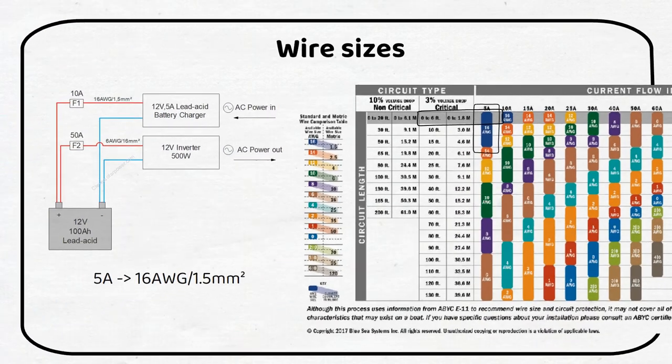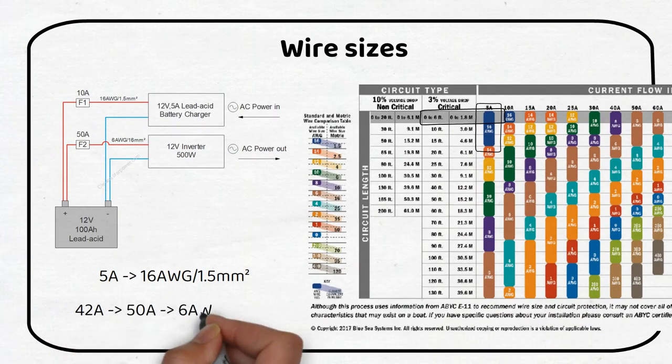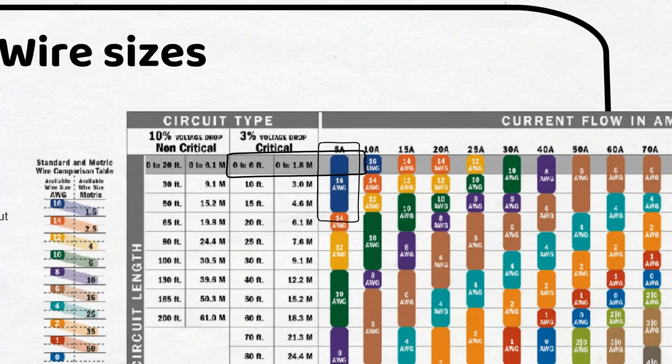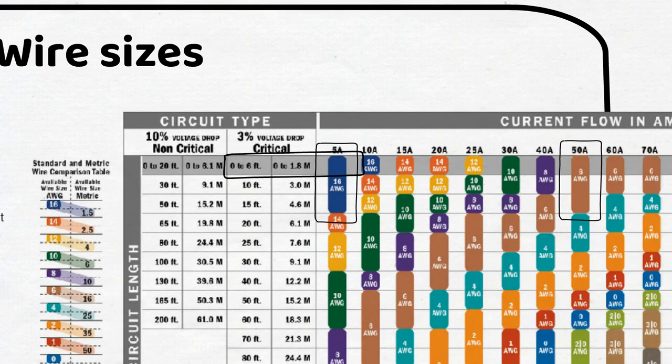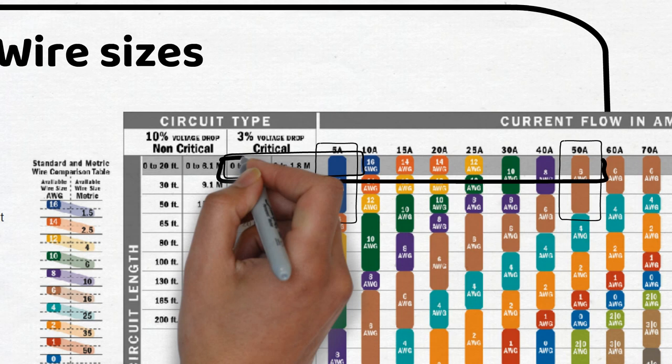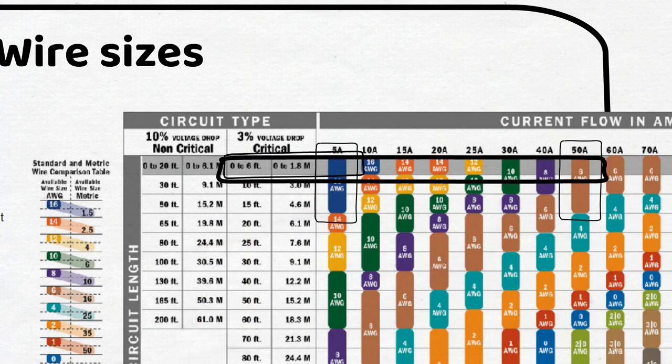The current from the inverter is 42 amps. The closest we can see in the table is 50 amps. If we keep the length of the wire under 6 feet we can see that we can use a 6 gauge or 16 millimeter square wire.